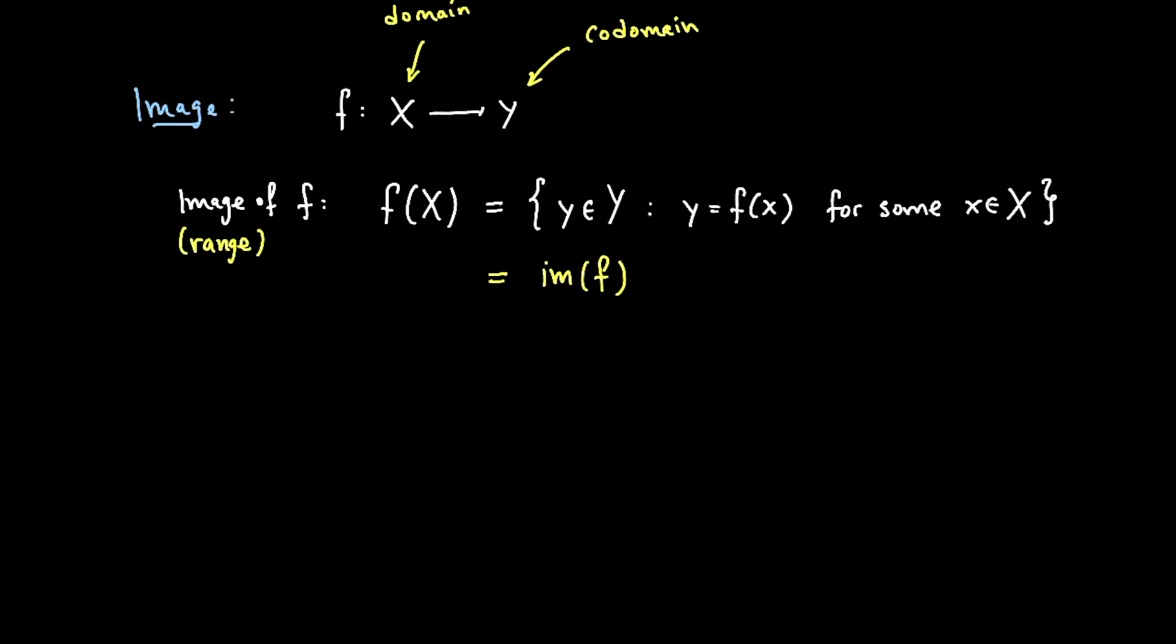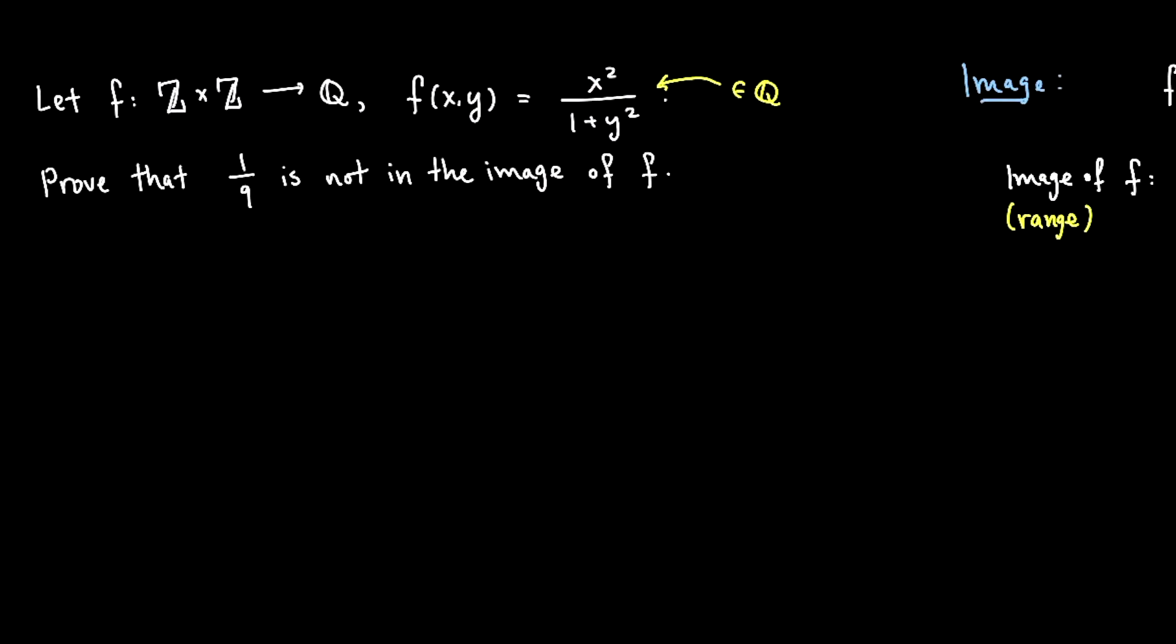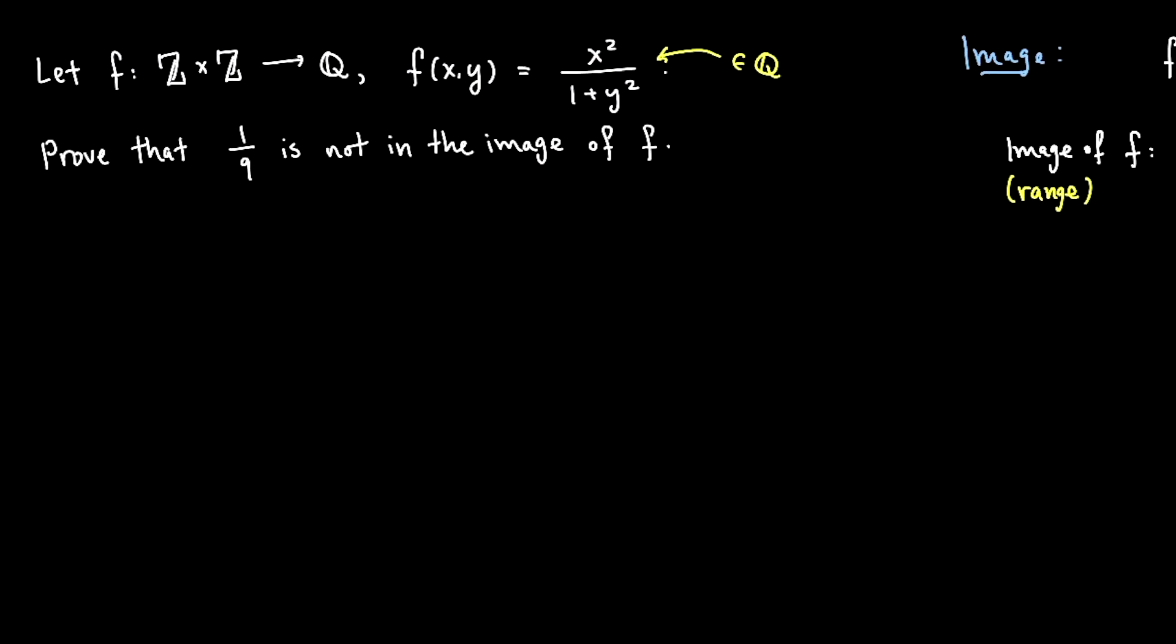But okay, that's what the image is. It's the set of all possible values. So what I want to show is that for this function, 1 over 9 is not in the image.